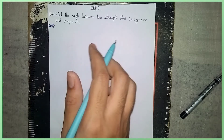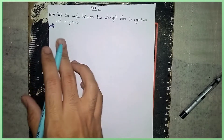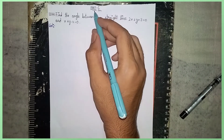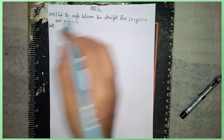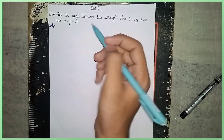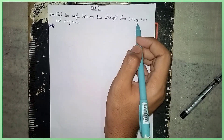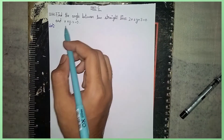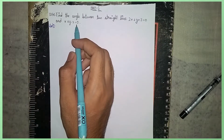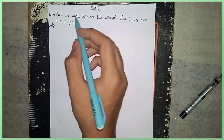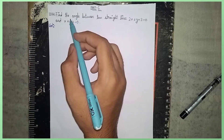Hello viewers, welcome back to my channel. This is my maths question paper part C, second semester diploma. Question number 13a: find the angle between two straight lines — 2x plus y plus 3 equals 0 and x plus y minus 2 equals 0.